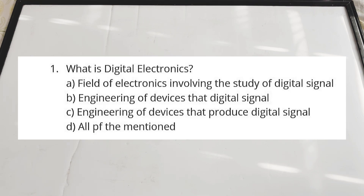The first question is: what is digital electronics? Option A: a field of electronics involving the study of digital signals. Option B: engineering of devices that use digital signals. Option C: engineering of devices that produce digital signals. Option D: all of the mentioned.